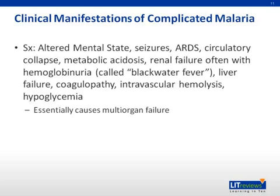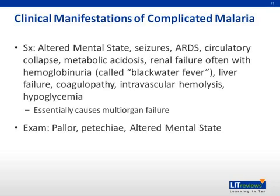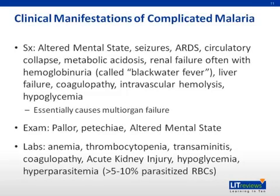Laboratory examination can reveal anemia, thrombocytopenia, transaminitis, coagulopathy, acute kidney injury, hypoglycemia, and hyperparasitemia. This is defined as greater than 5% parasitized red blood cells in low transmission areas and greater than 10% parasitized red blood cells in high transmission areas.